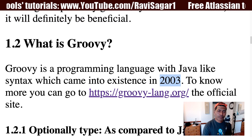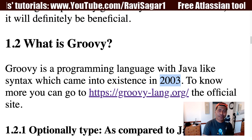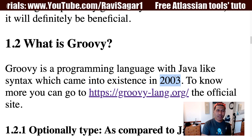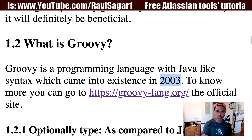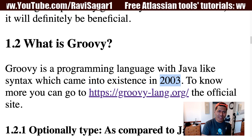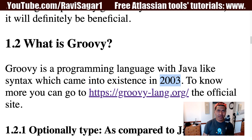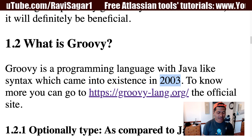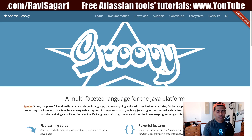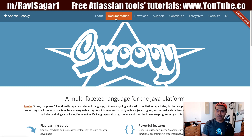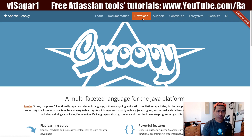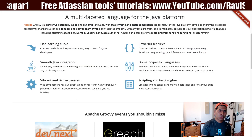Groovy came into existence in 2003, which is almost 17 years ago. If you want to know more about Groovy, the best place is the official website: groovy-lang.org. If you come to this website, you can learn a lot about Groovy. You have instructions about how to install Groovy and how to get started. You can install Groovy on Windows, Linux, or Mac, and you can learn about the full capabilities of Groovy.